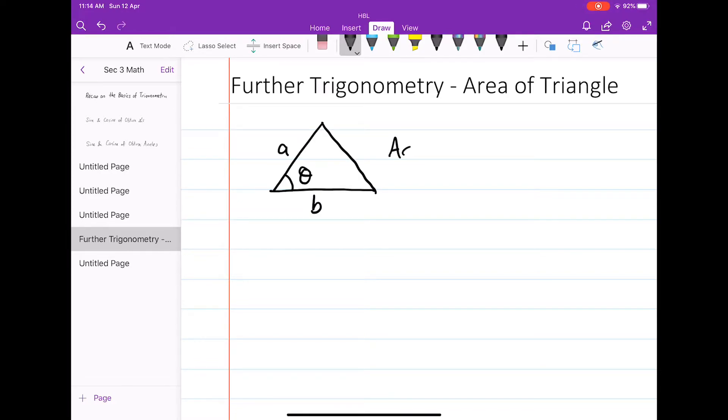The area of this triangle is given by this formula: half A times B times the sine of theta.